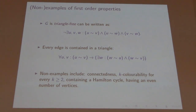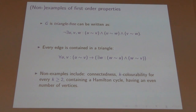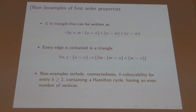Similarly, you cannot express that the graph can be colored with two colors, or that it is bipartite, or four-colorable, or containing a Hamilton cycle. Also, having an even number of vertices cannot be expressed. The key point is that it needs to be a fixed formula with a fixed number of variables that is really true for all graphs with the property and false for all without.